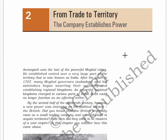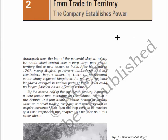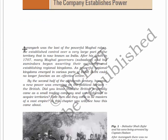Hello everyone, welcome to Saroshi Classes. Let's start reading NCERT Class 8 History, Chapter 2: From Trade to Territory - The Company Establishes Power. Aurangzeb was the last powerful Mughal ruler and he established control over a very large part of the territory that is now known as India. After his death in 1707,